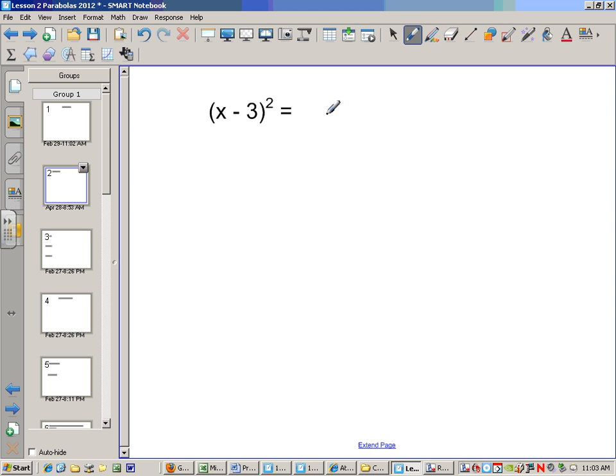Now x minus 3 squared is like x minus 3 times x minus 3. If I FOIL this out, this will be x squared minus 3x minus 3x plus 9, or x squared minus 6x plus 9.